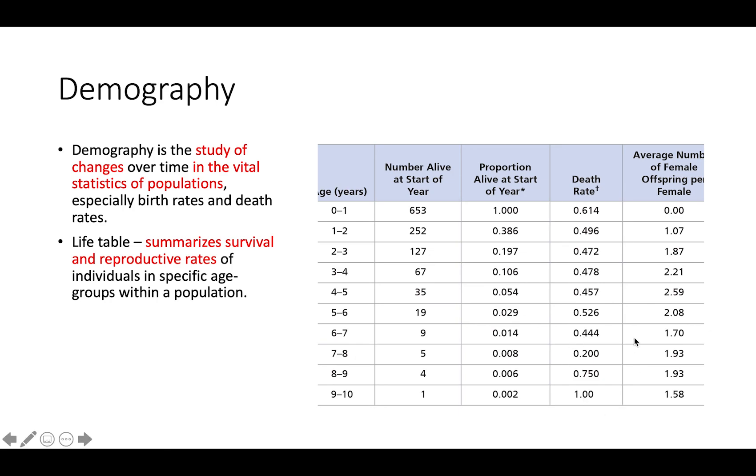Here we can see an example of a life table. It's broken up by age group, and for each group, we can see the number of individuals alive at the start of the year and the death rate, which gives us the survival rate. We also have the reproductive rate listed.